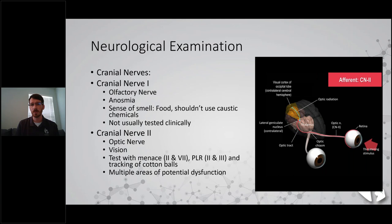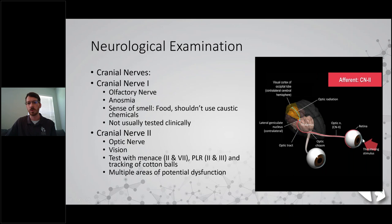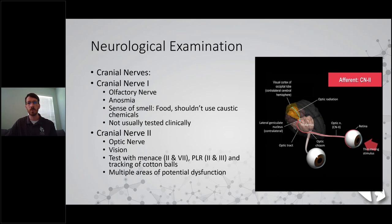There are multiple potential areas of dysfunction if a patient is not visual. You always have to take a good look at the eyes because retinal detachment, uveitis, cataracts, and bad glaucoma can cause ocular disease rather than neurological problems. Make sure you rule that out before definitively diagnosing neurologic problems. You can have problems along the optic nerve or within the optic chiasm. The vision pathway decussates - crosses over - so when testing vision in your left eye, the right forebrain is processing that information in the occipital lobe.